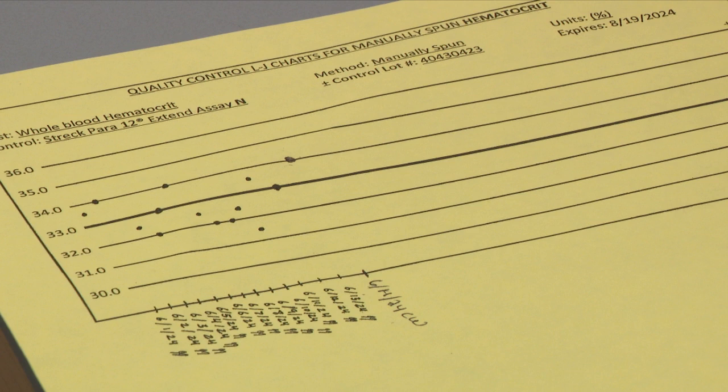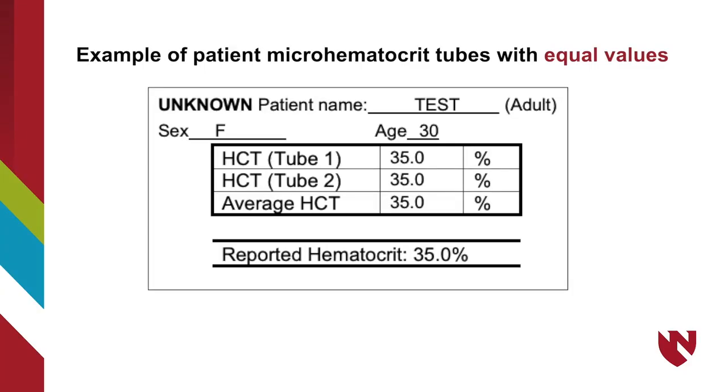Once the hematocrit controls are acceptable, read the patient's hematocrit tubes. Our first micro hematocrit value is 35.0 percent and our second micro hematocrit value is 35.0 percent. We are within one percent, so we can take the average, which is 35.0 percent, and report that.